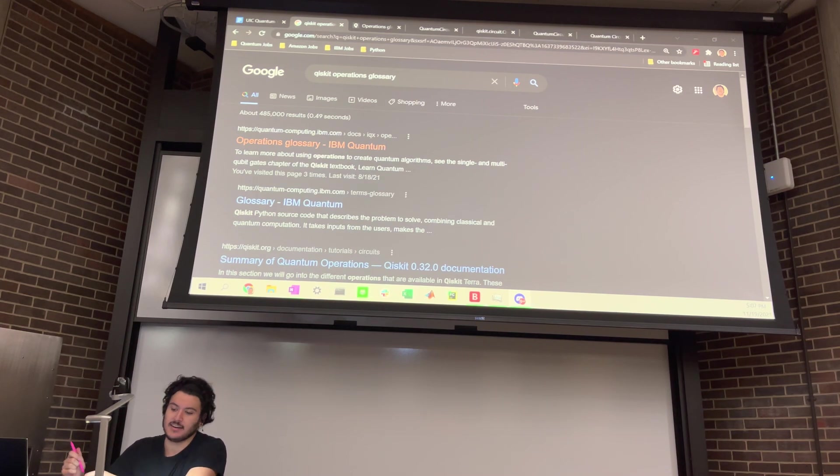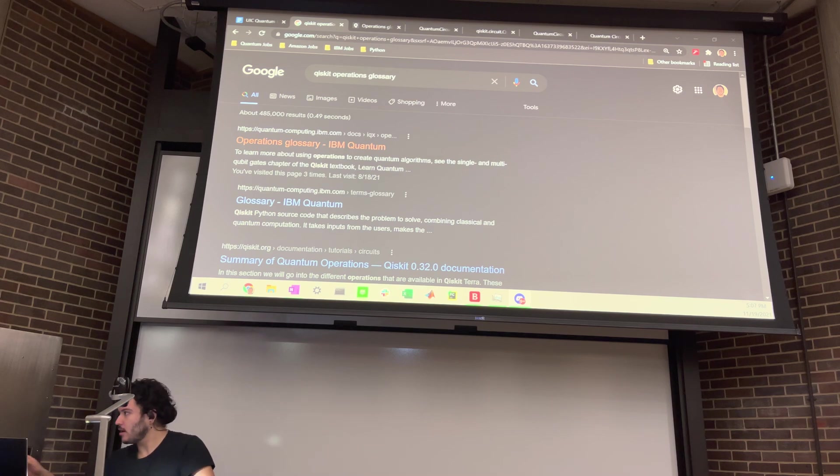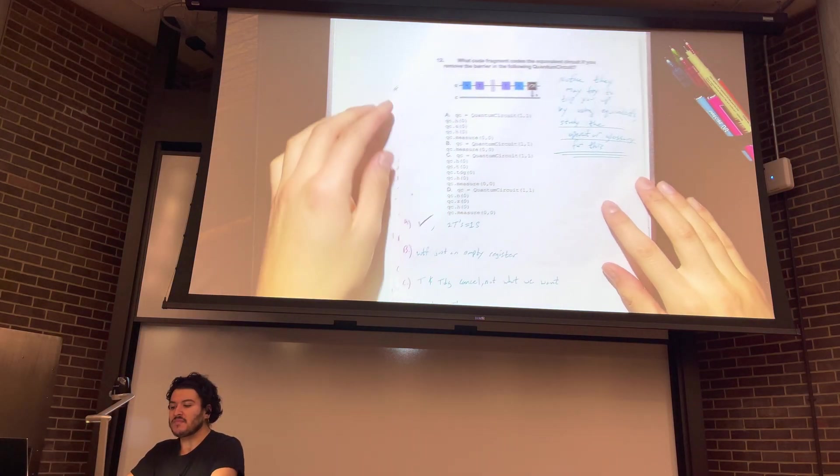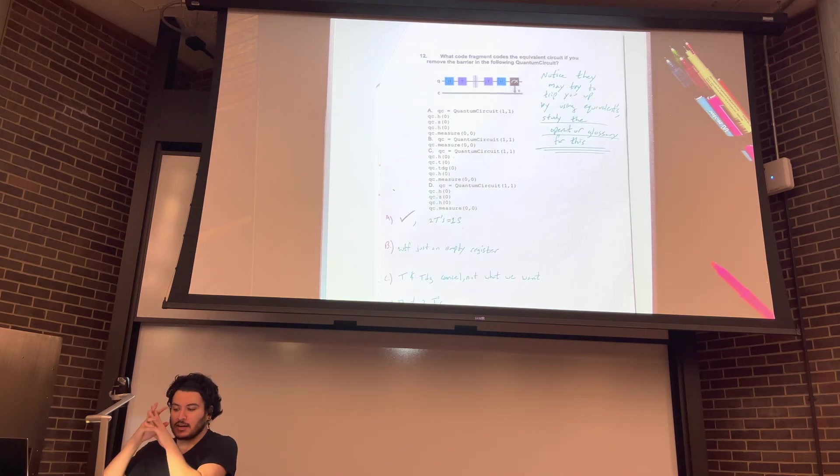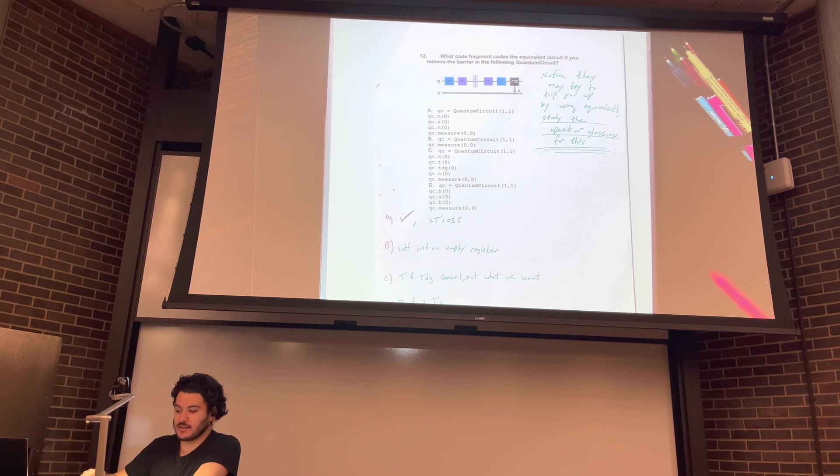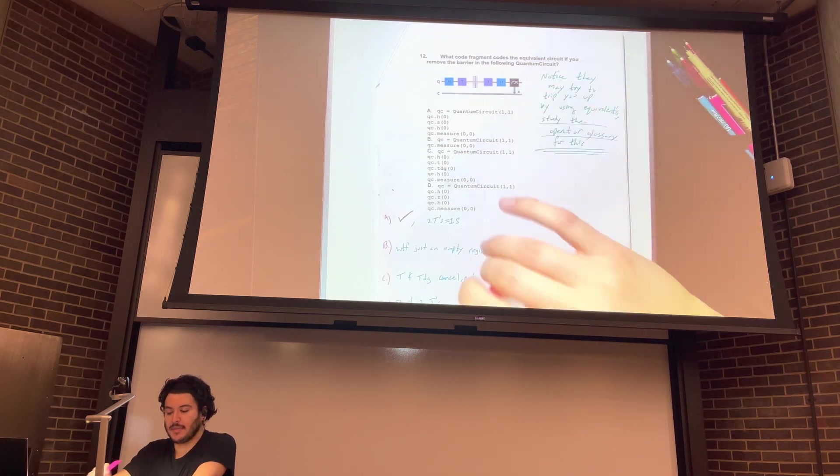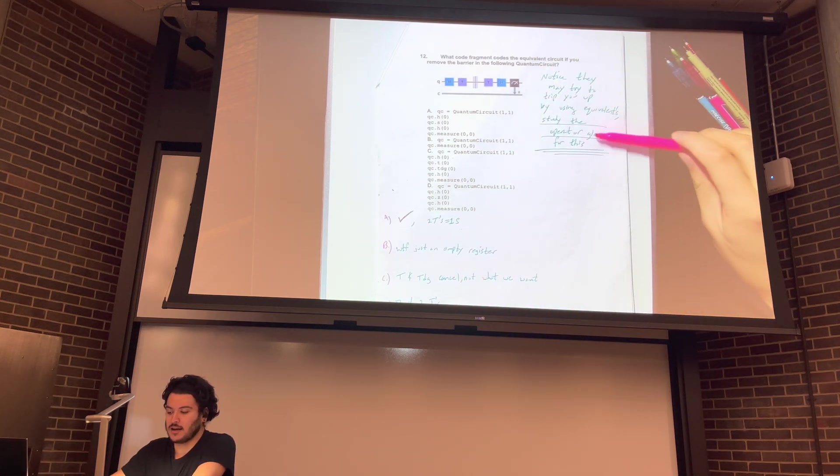Okay, question 12. Again, if you're wondering how to get to these questions, watch the video where we go over sample questions two and three, and we go over how to get to these questions. So, question 12. Which code fragment codes the equivalent circuit if you remove the barrier in the following quantum circuit? Okay, so let's take a look at what's already written. Notice they may try to trip you up by using equivalence. Study the operator glossary for this.